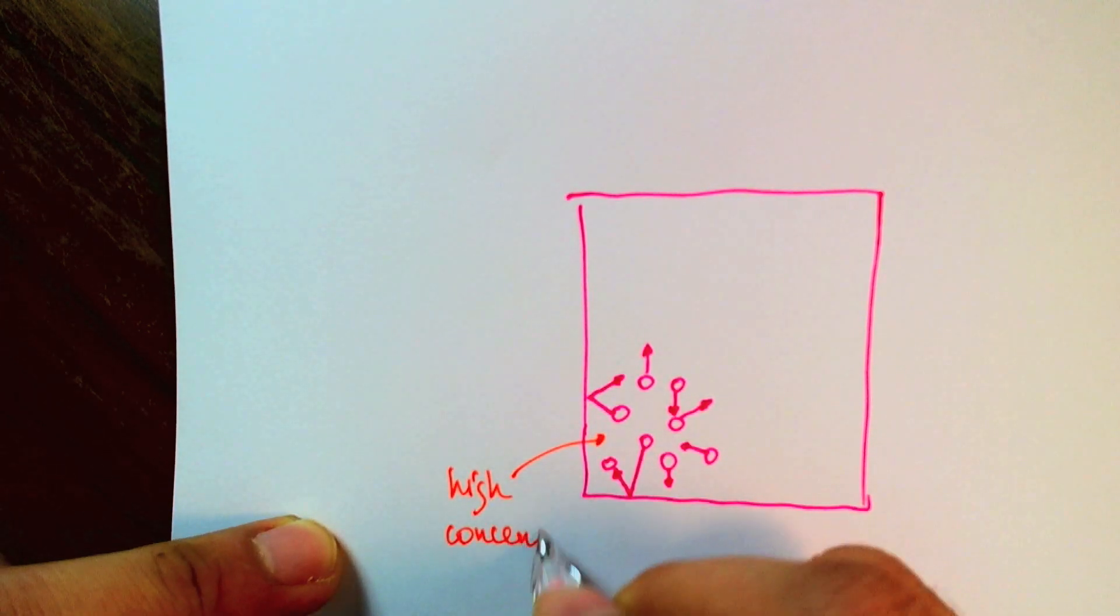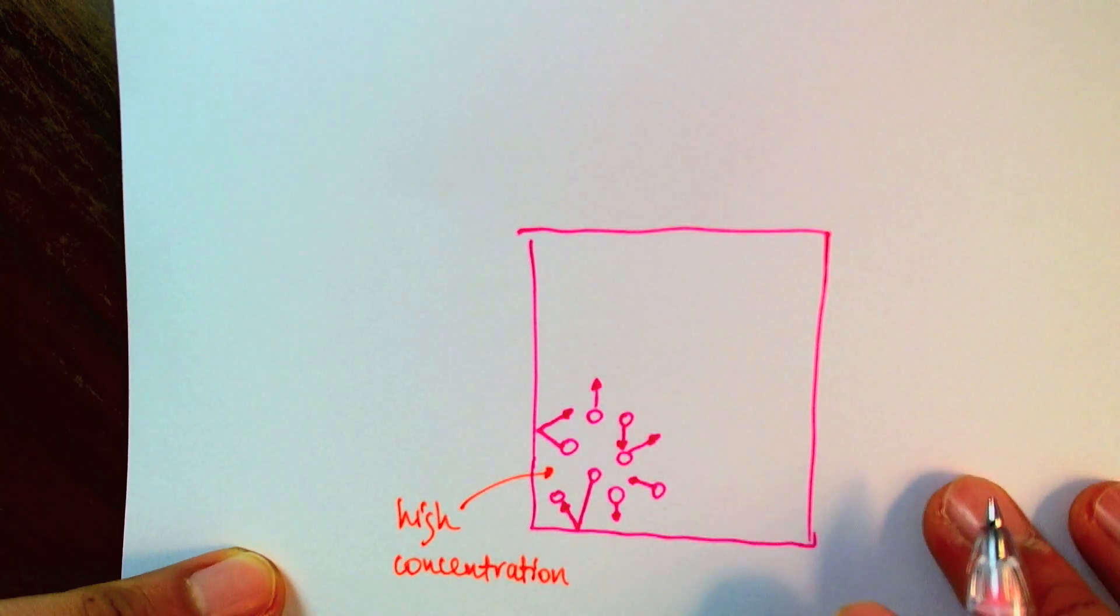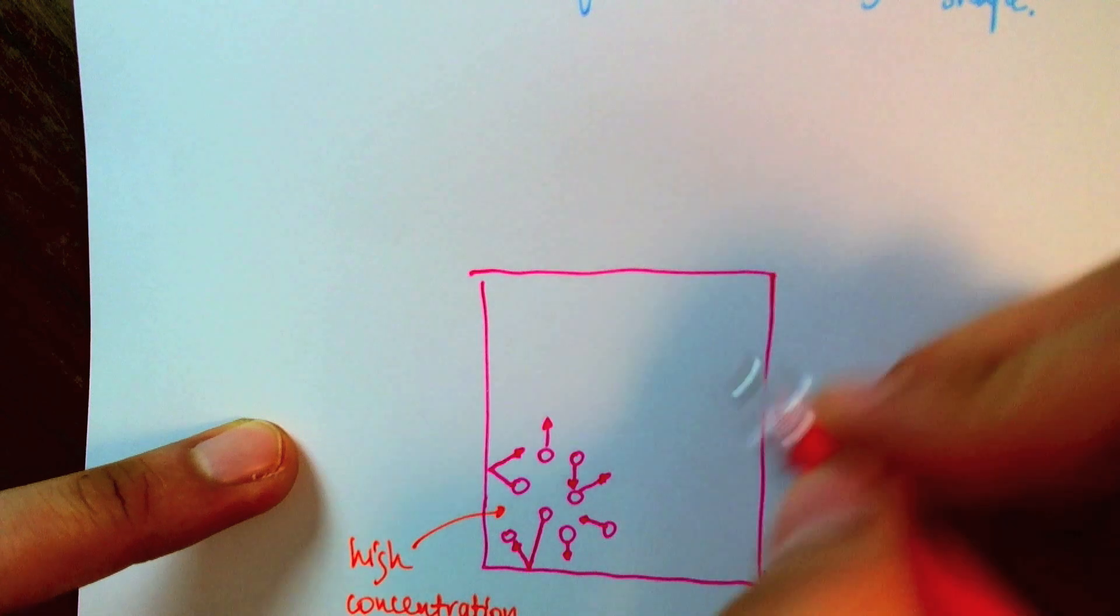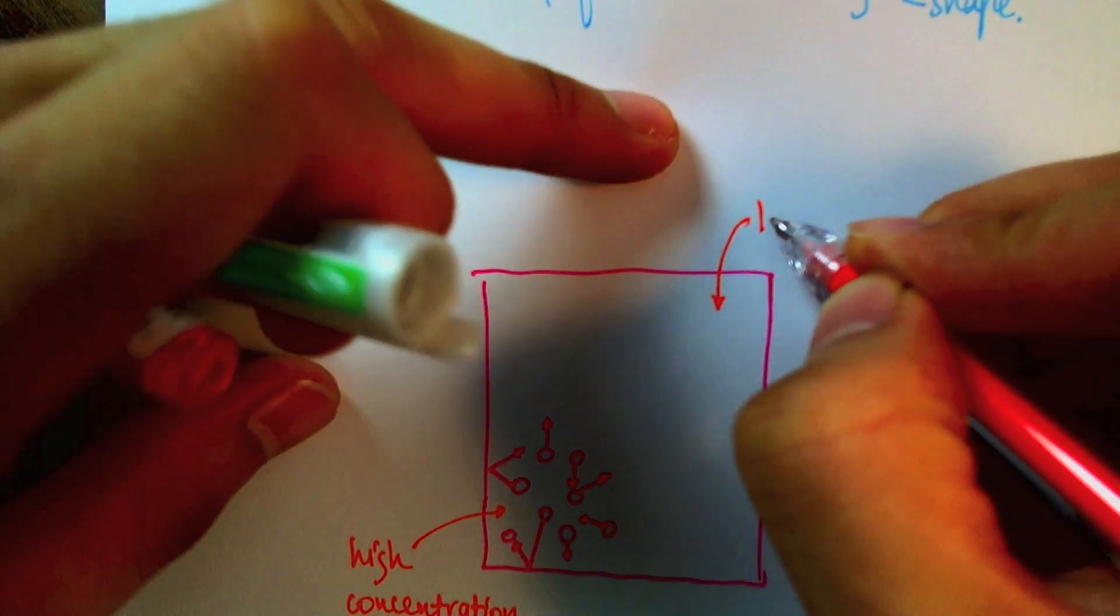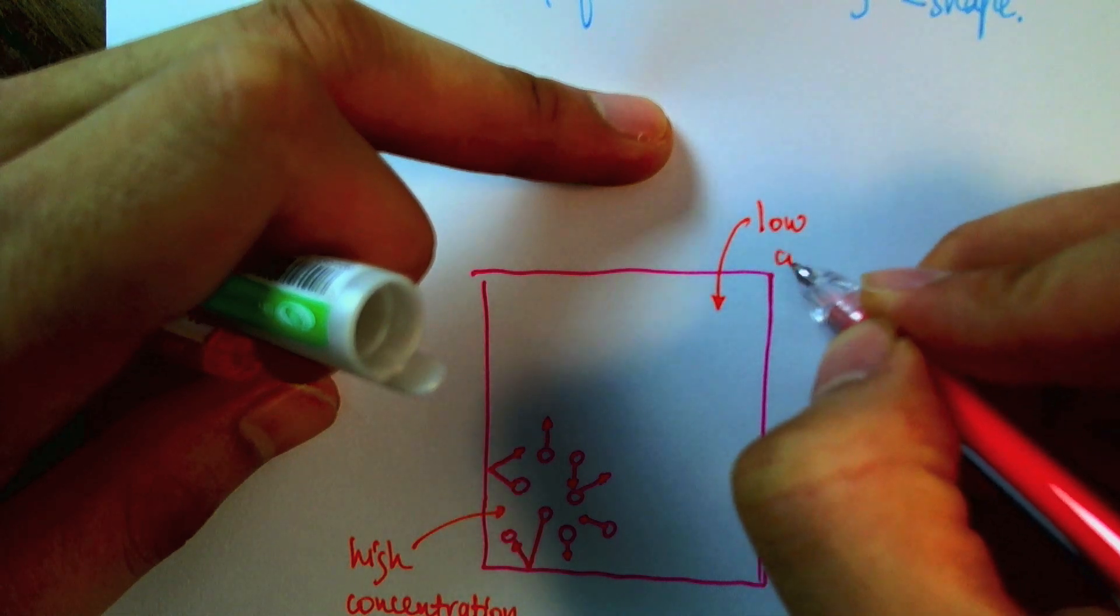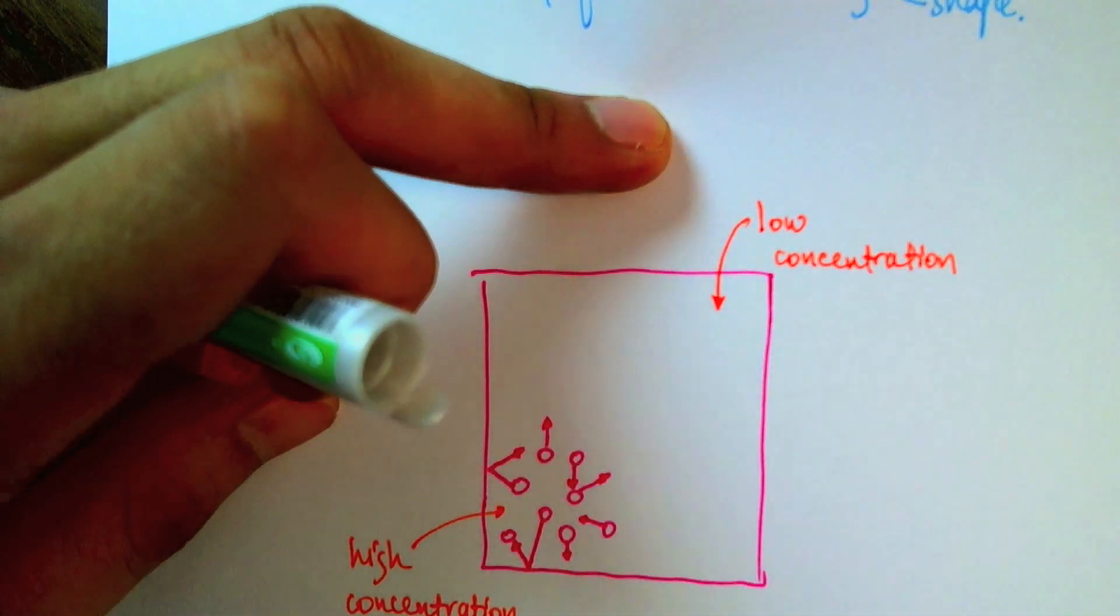The notion of concentration is just number of particles in a given volume. And over here, where we have no particles, we say that this area has a low concentration of the particles.